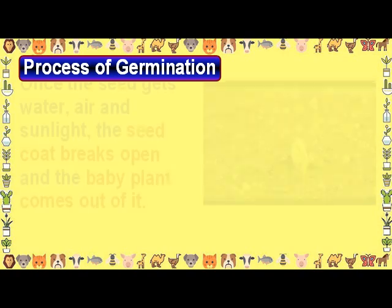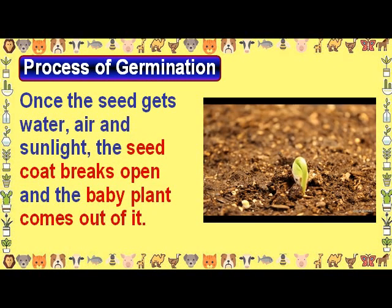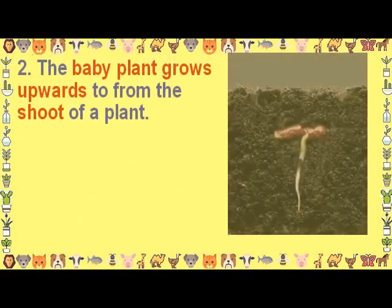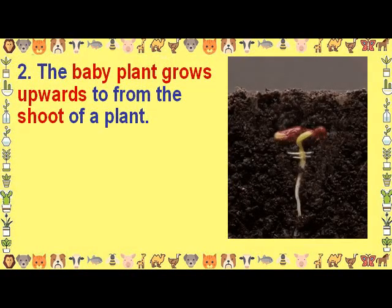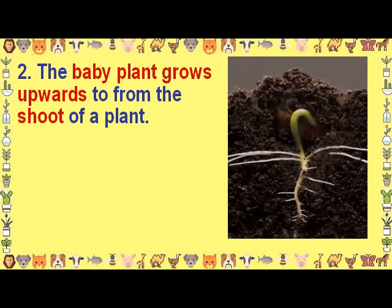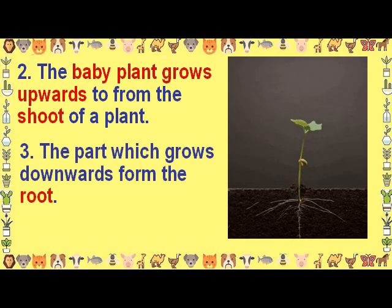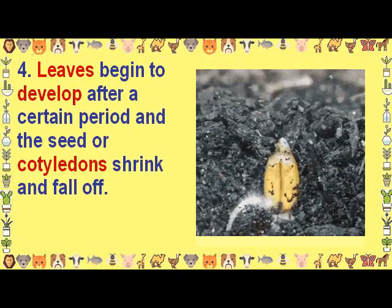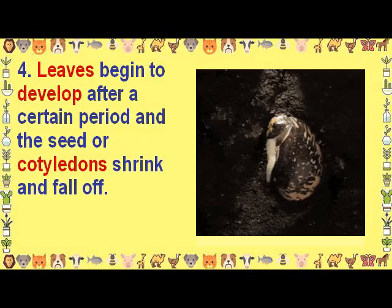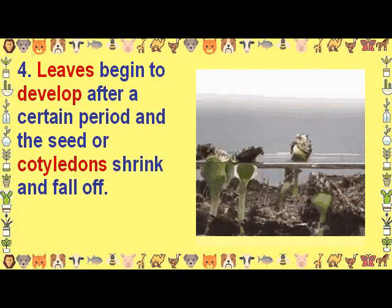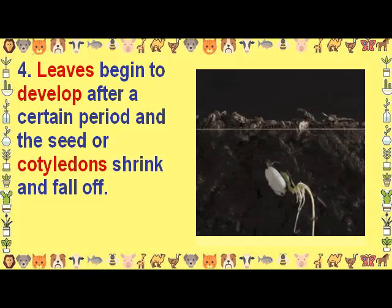Process of Germination. Once the seed gets water, air and sunlight, the seed coat breaks open and the baby plant comes out of it. The baby plant grows upwards to form the shoot of the plant. The part which grows downwards forms the root. Leaves begin to develop after a certain period, and the seed or cotyledons shrink and fall off.